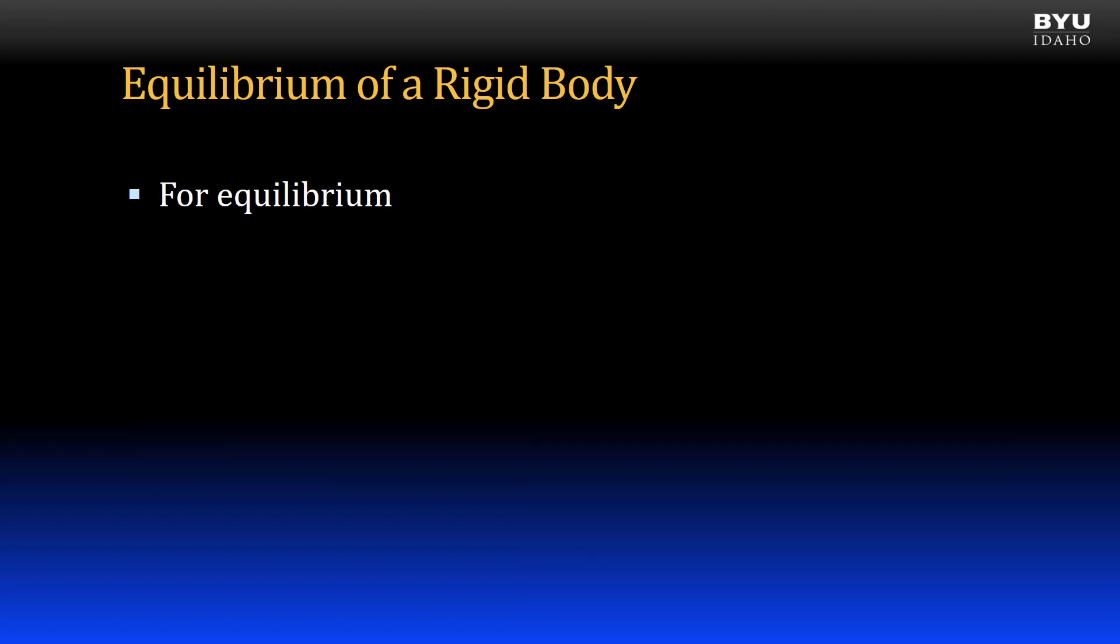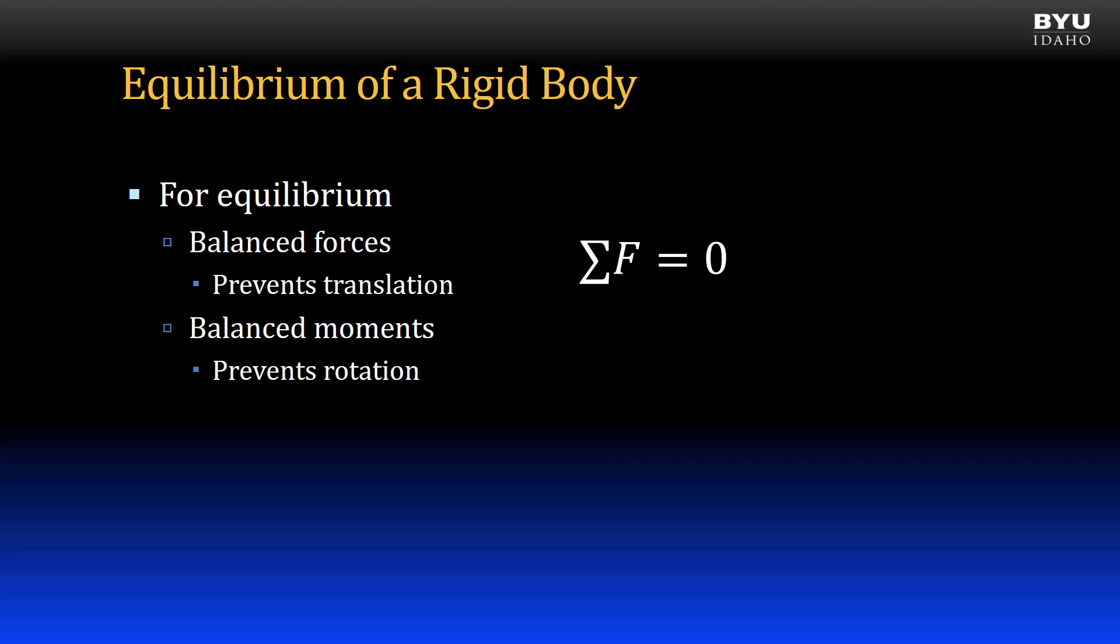So, for equilibrium of a rigid body, the forces acting on the body must be balanced, or the sum of the forces must equal zero. Balanced forces prevent translation, or linear motion, of the body. Also, the moments acting on the body must be balanced, or the sum of the moments must equal zero. Balanced moments prevent rotation of the body.